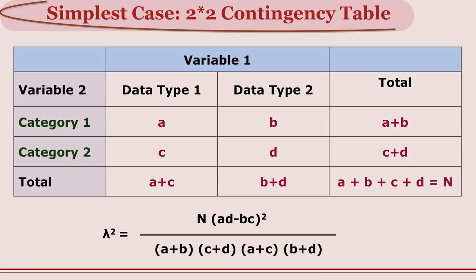The simplest way of computing chi square is using a contingency table — specifically a 2 by 2 contingency table. In this table we have variable 1 and variable 2, each with data type 1 and data type 2, giving us categories. Data type 1 category 1 is denoted by A, data type 1 category 2 by C, data type 2 category 1 by B, and data type 2 category 2 by D. So we have 4 cells: A, B, C, and D.